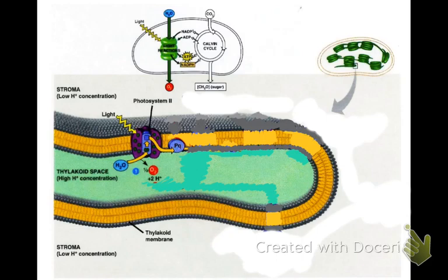The electron moves from plastoquinone to the cytochrome complex to plastocyanin. That movement actually generates energy to pump hydrogen ions from the outside of the membrane to the inside of the membrane. This is active transport, and it's also creating a proton motive force.